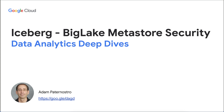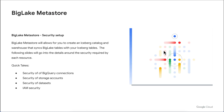Today we'll be talking about Apache Iceberg and the BigLake Metastore, and particularly the security that needs to be configured so everything works smoothly. BigLake has a Metastore, and this Metastore is a custom Apache Iceberg catalog. It allows your BigLake tables within BigQuery to stay in sync with your Iceberg tables. So if you're updating Iceberg tables with Spark, it's changing the metadata as inserts, updates, and deletes are occurring, and we want to make sure that BigQuery stays in sync with those changes.